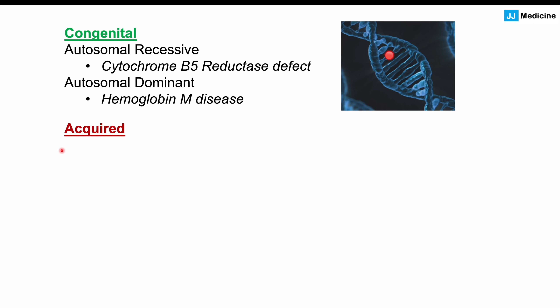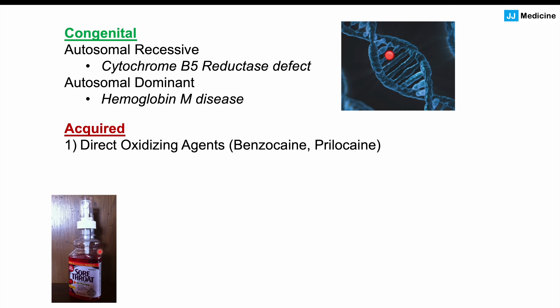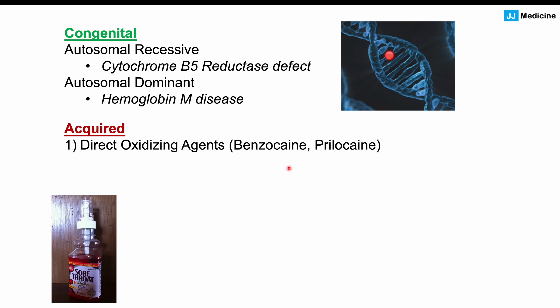Acquired methemoglobinemia is actually the most common form of this condition. It can occur through exposure to direct oxidizing agents, including benzocaine and prilocaine. Benzocaine is an anesthetic found in numerous throat sprays. If someone takes too much, benzocaine can act as an oxidizing agent and convert the reduced iron ion into the oxidized iron, leading to methemoglobinemia. Benzocaine exposure seems to be the most common cause of acquired methemoglobinemia, and perhaps the most common cause overall.